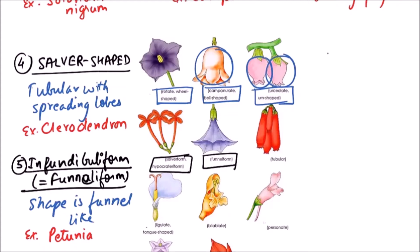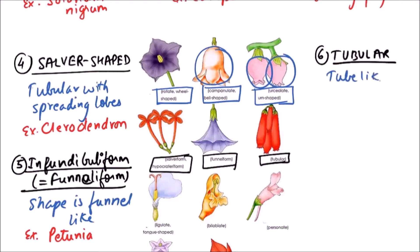The next one is Tubular. We can observe that this is tubular. The appearance is tube-like, and the example includes the disc floret of sunflower.